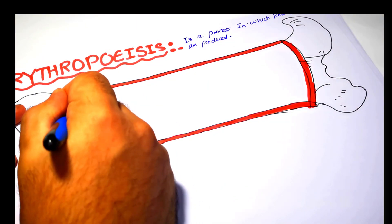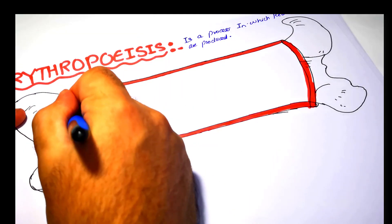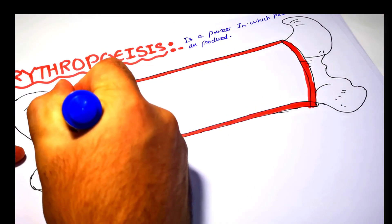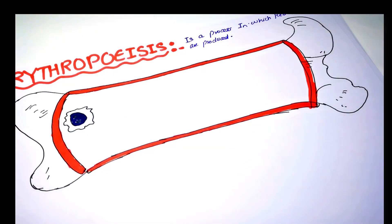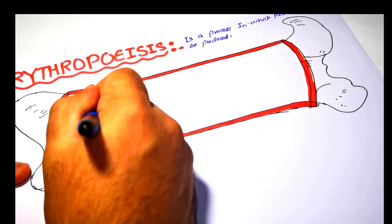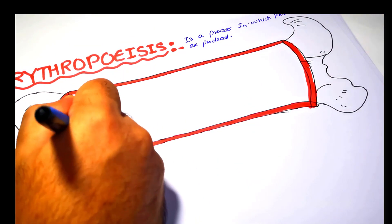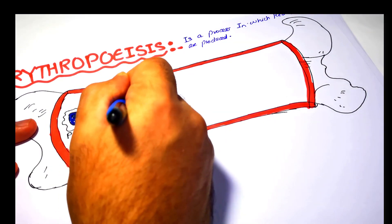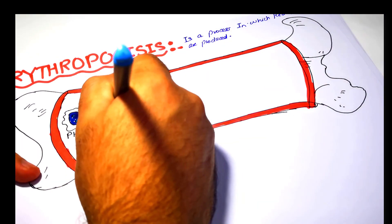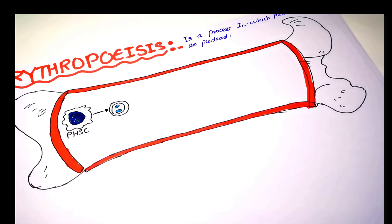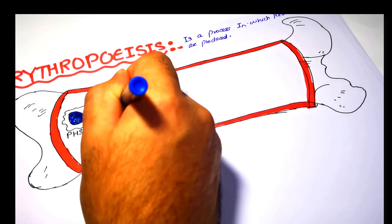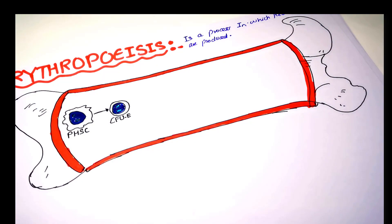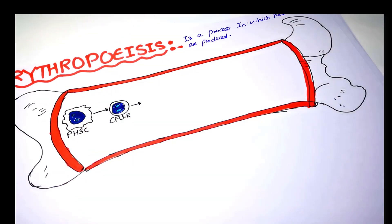First of all, we have the pluripotent hematopoietic stem cells, which are capable of differentiating into any type of blood cell. In this part, we will look at how the pluripotent hematopoietic stem cells differentiate into red blood cells. First, the pluripotent hematopoietic stem cells will be differentiated into the colony-forming unit erythrocyte.